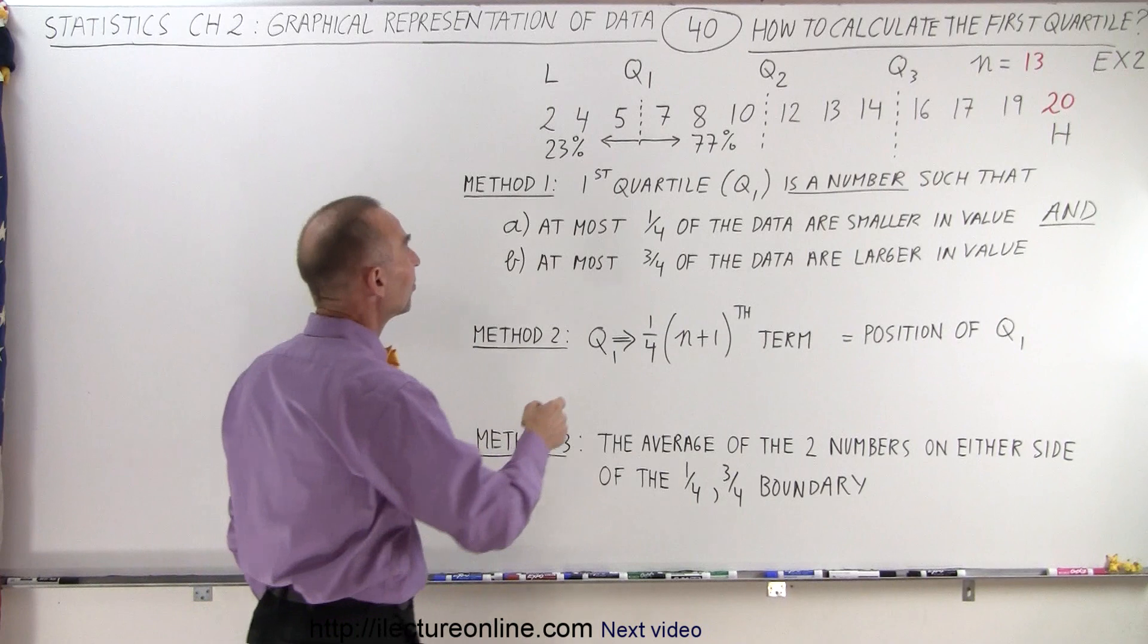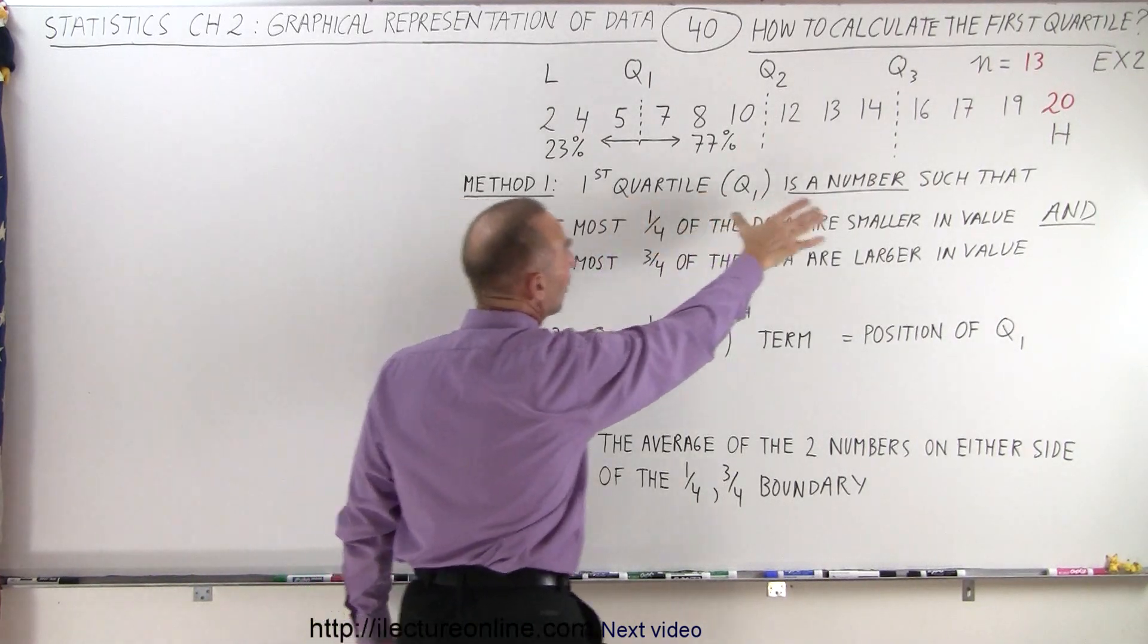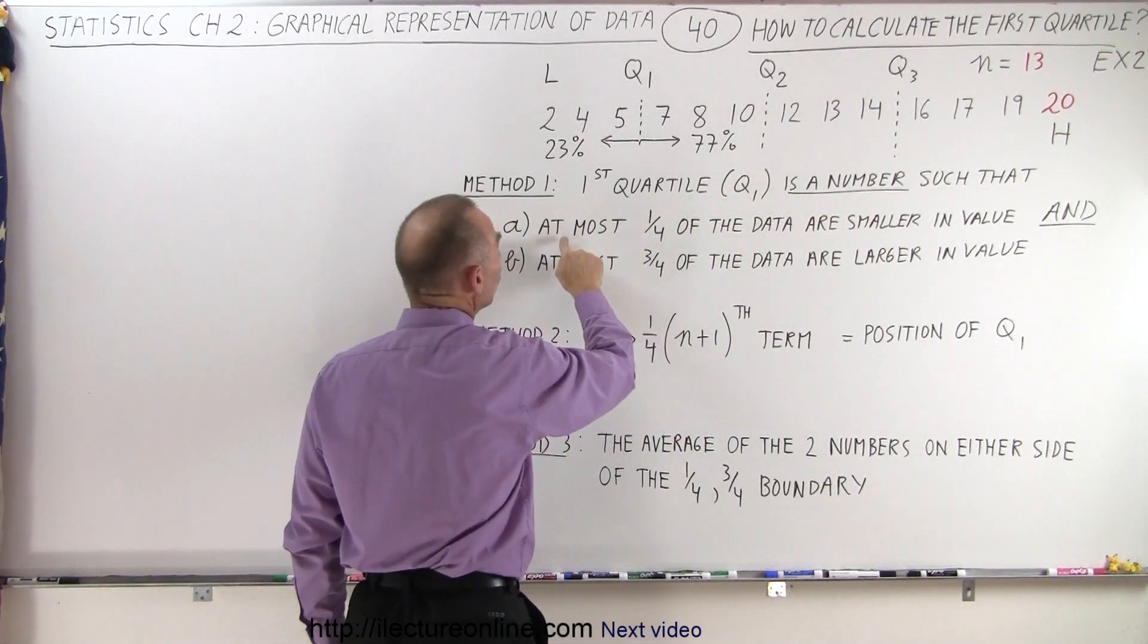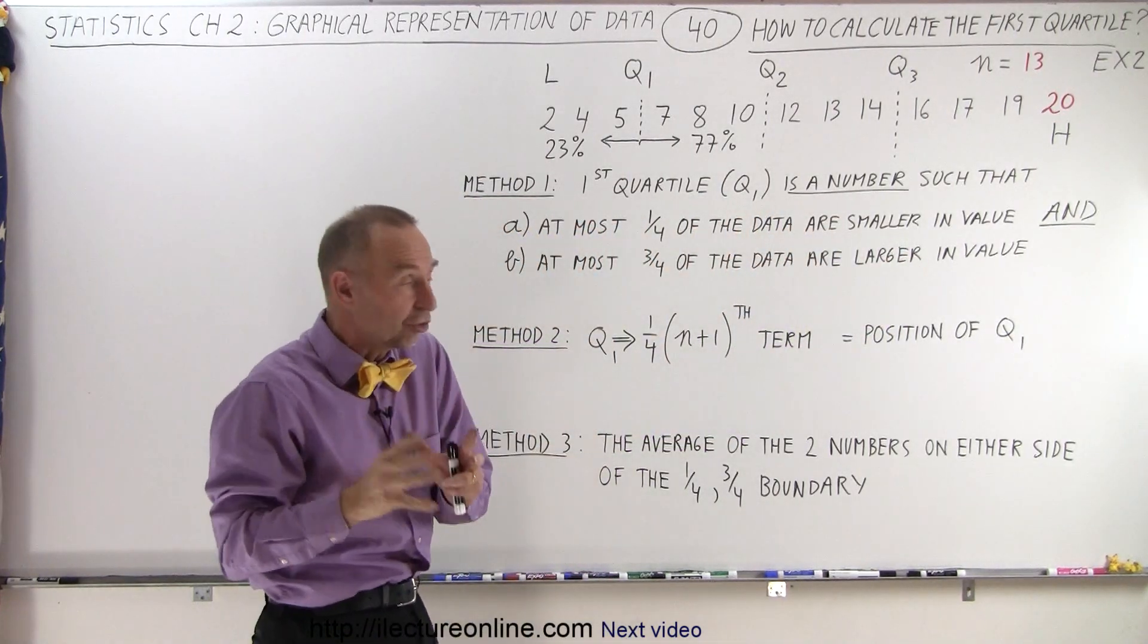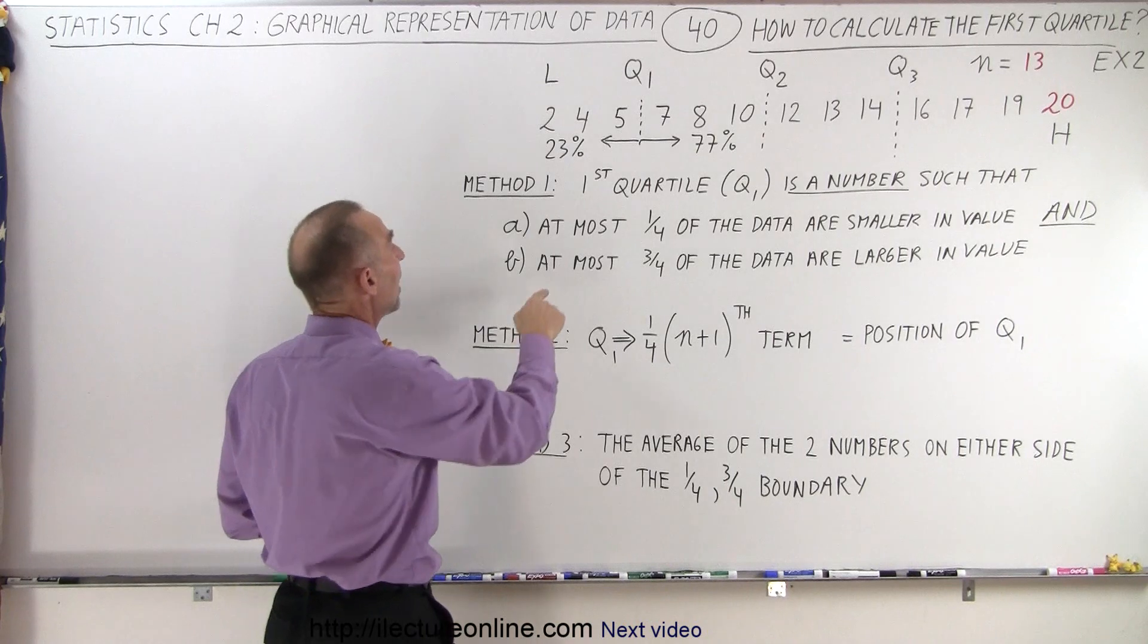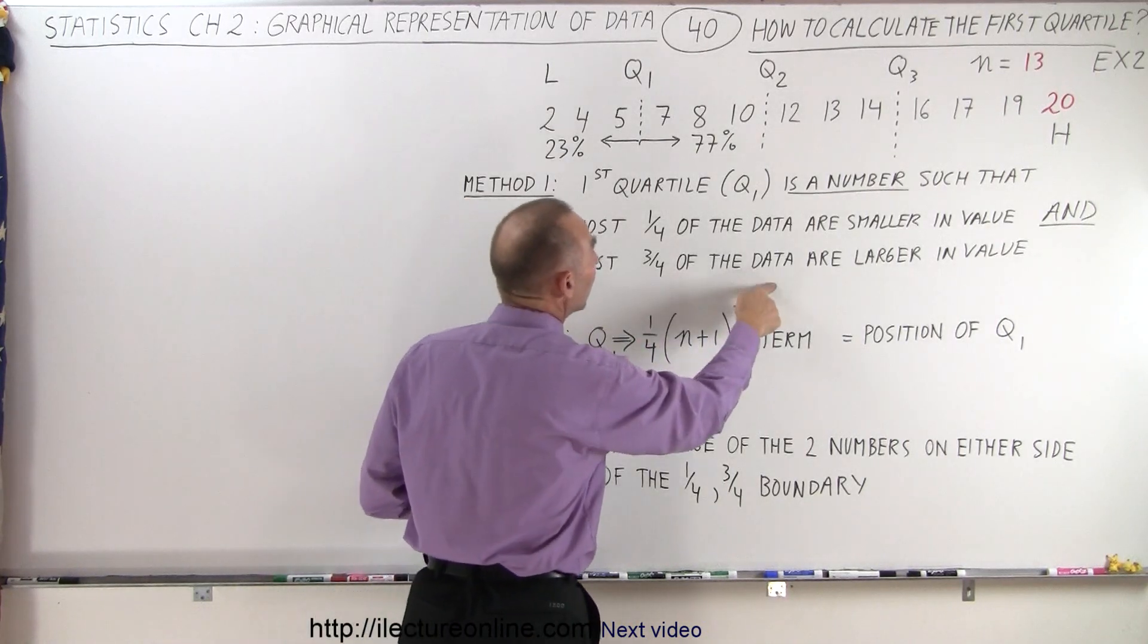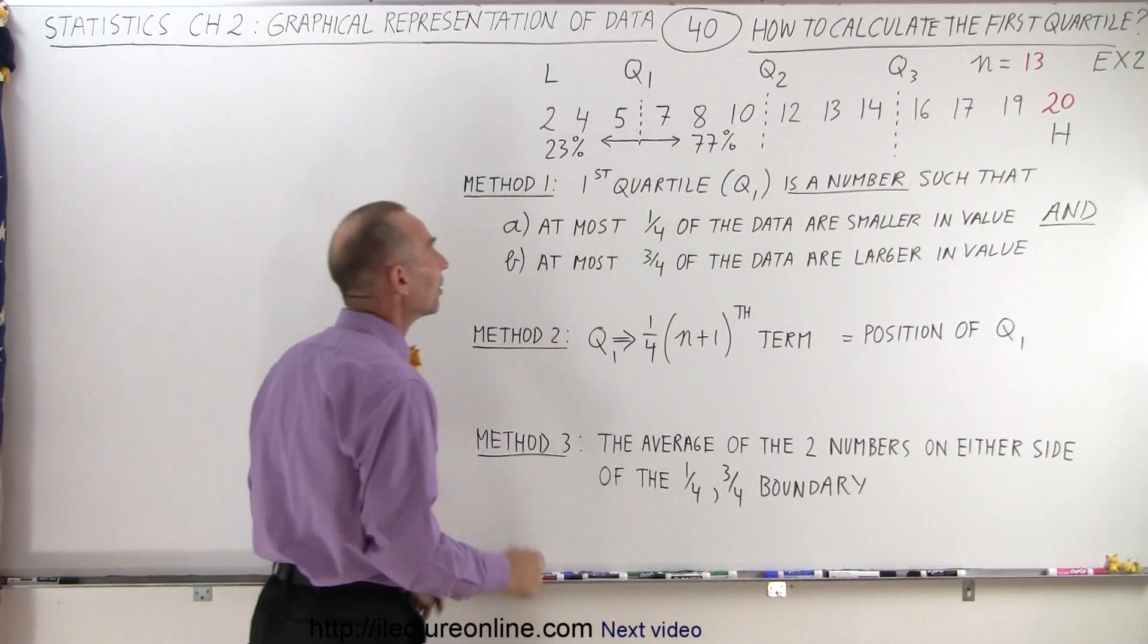Method number one says that the first quartile is a number such that at most one quarter of the data are smaller in value, and because it's an AND condition they both must be true at the same time, at most three quarters of the data are larger in value.